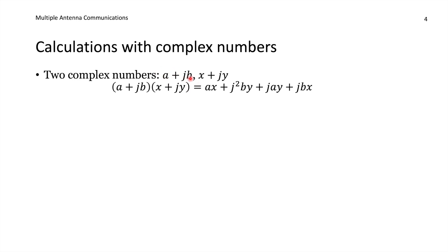Let us look at some basic calculations with complex numbers. We have two numbers: a plus jb and x plus jy. We multiply these together and expand the expression: we get a times x, then jb times jy gives j squared by, then a times jy, and jb times x. Since j was defined as the square root of minus one, j squared becomes minus one, so we replace it accordingly.